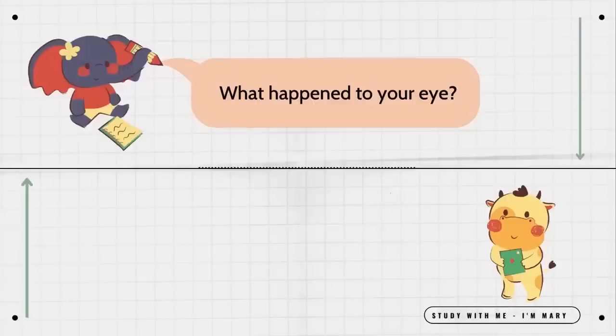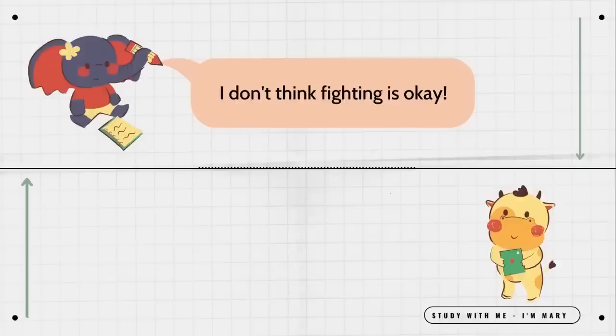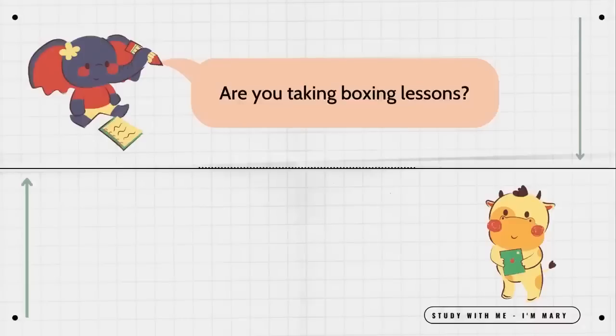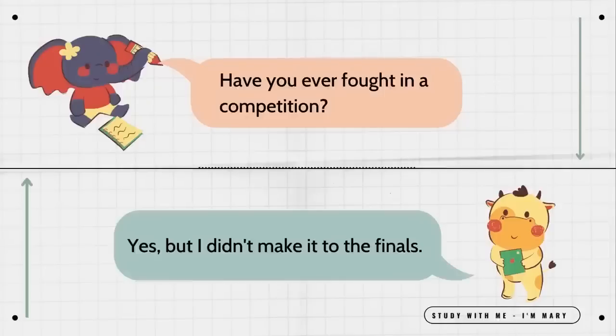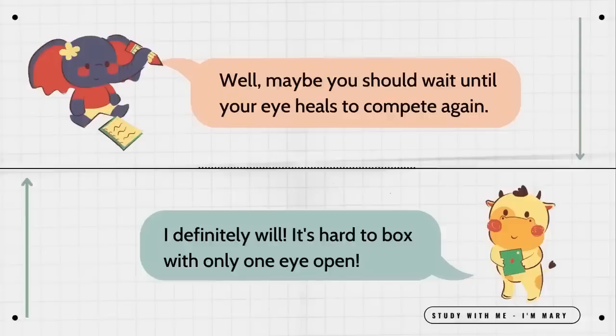What happened to your eye? I was punched in the eye. You got into a fight? Yes, but it's all right. I don't think fighting is okay. I was fighting in a boxing match. Are you taking boxing lessons? Yes, I go every evening. Have you ever fought in a competition? Yes, but I didn't make it to the finals. Well, maybe you should wait until your eye heals to compete again. I definitely will. It's hard to box with only one eye open.